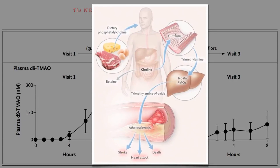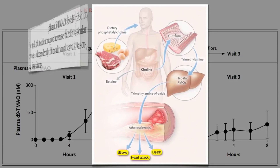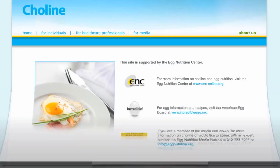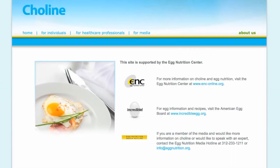The link between TMAO levels in the blood and strokes, heart attacks, and death was seen even in low-risk groups — like those with low cholesterol levels. So eating eggs may increase our risk regardless of what our cholesterol is, because of the choline. It's ironic that the choline content of eggs is something the egg industry actually boasts about.